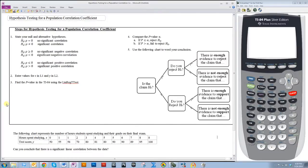This video is going to quickly cover hypothesis testing for a population correlation coefficient. There are five steps that you need to do.